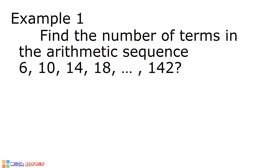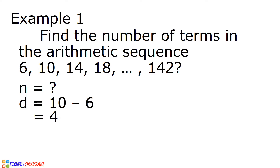Let us first determine all the given values. n is the missing term, since we are looking for the number of terms. The common difference is the difference of any two consecutive terms: 10 minus 6 is equal to 4. The first term is equal to 6. And we have last term, or a sub n, and that is equal to 142.